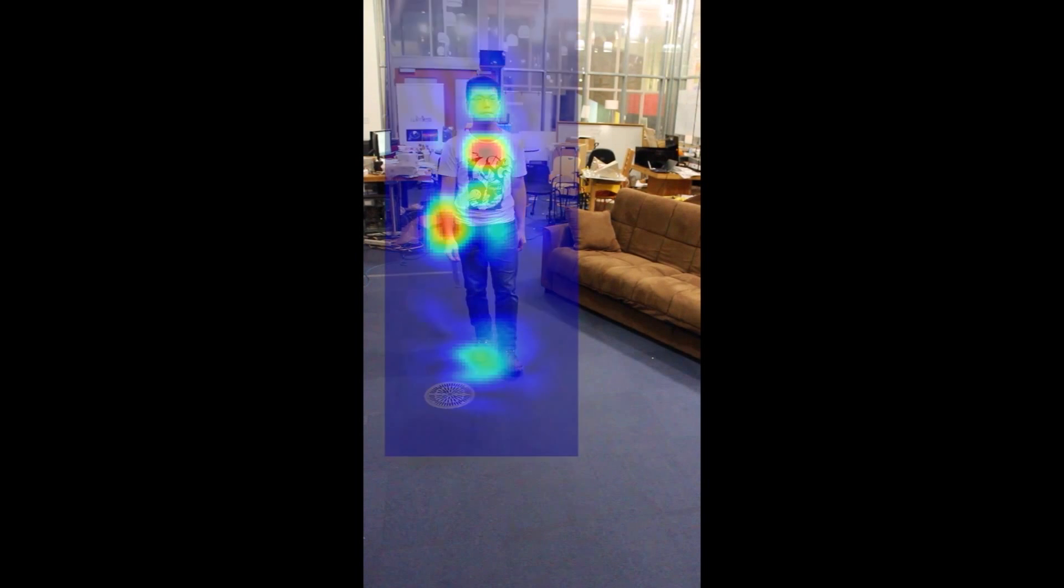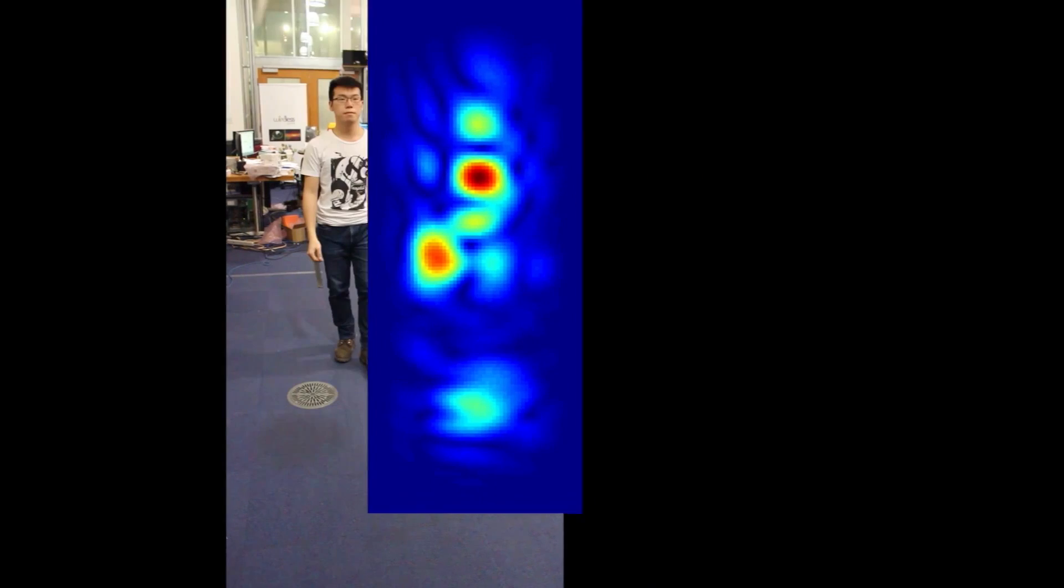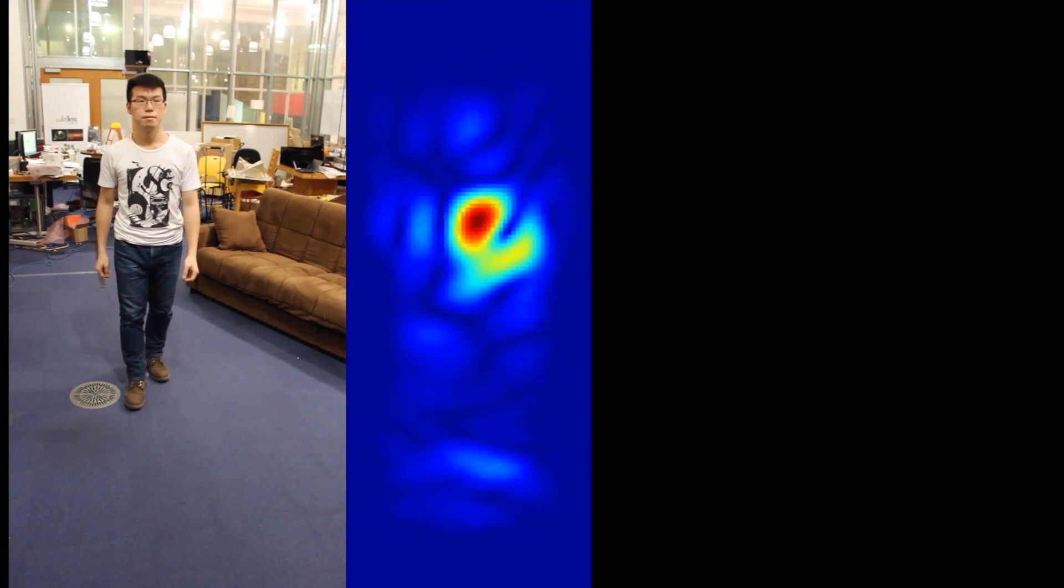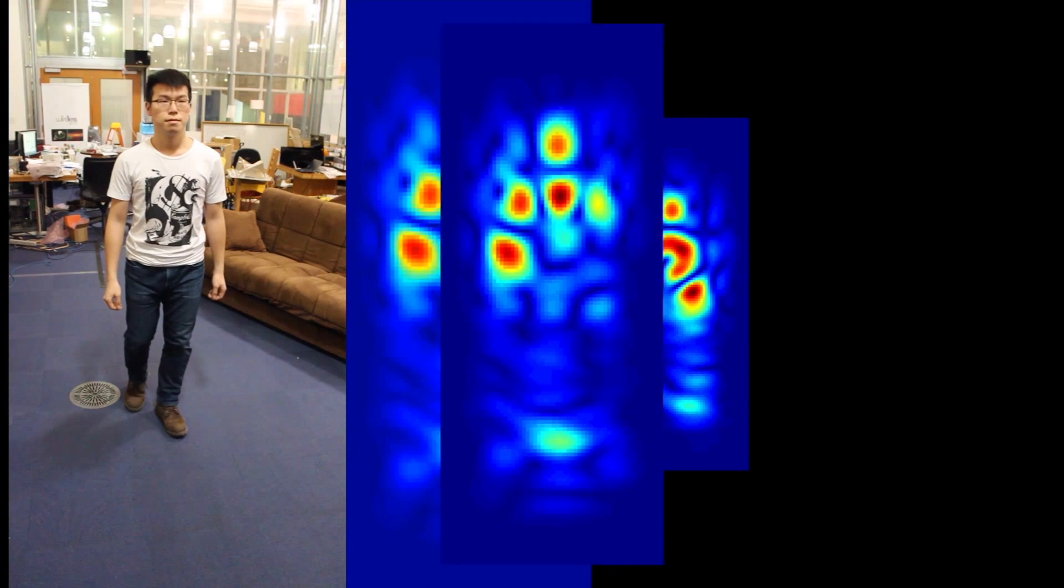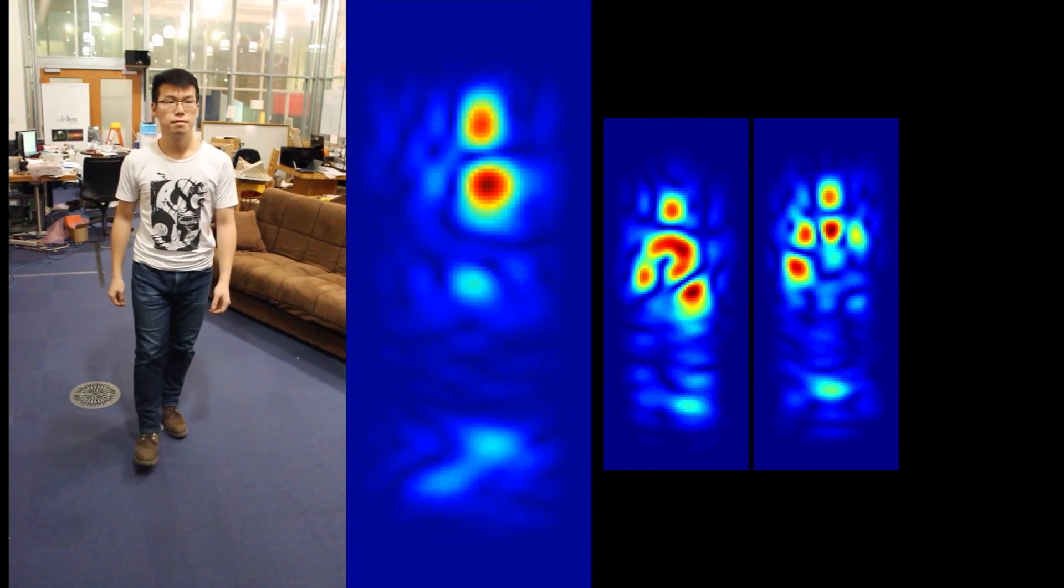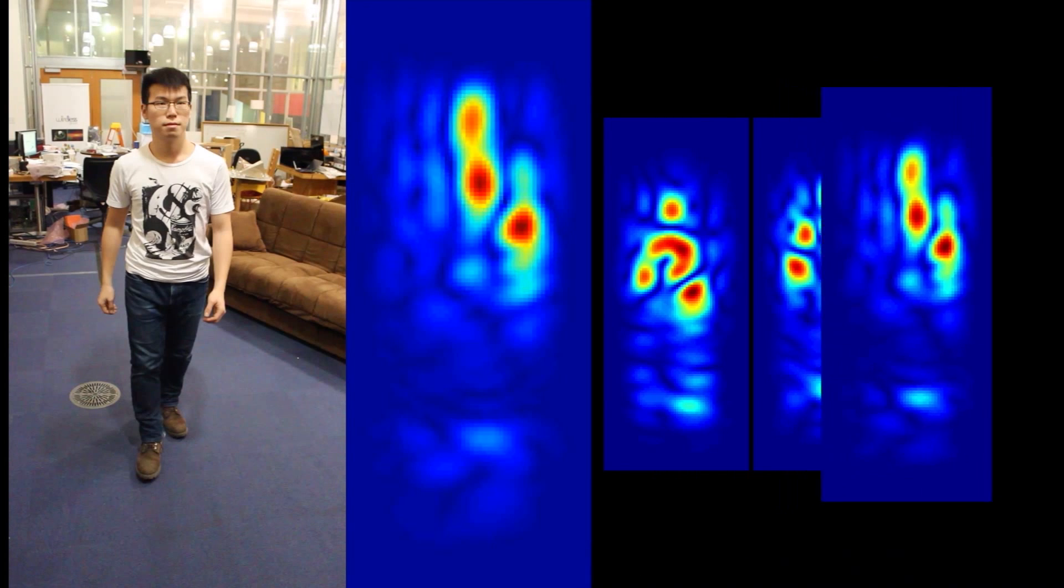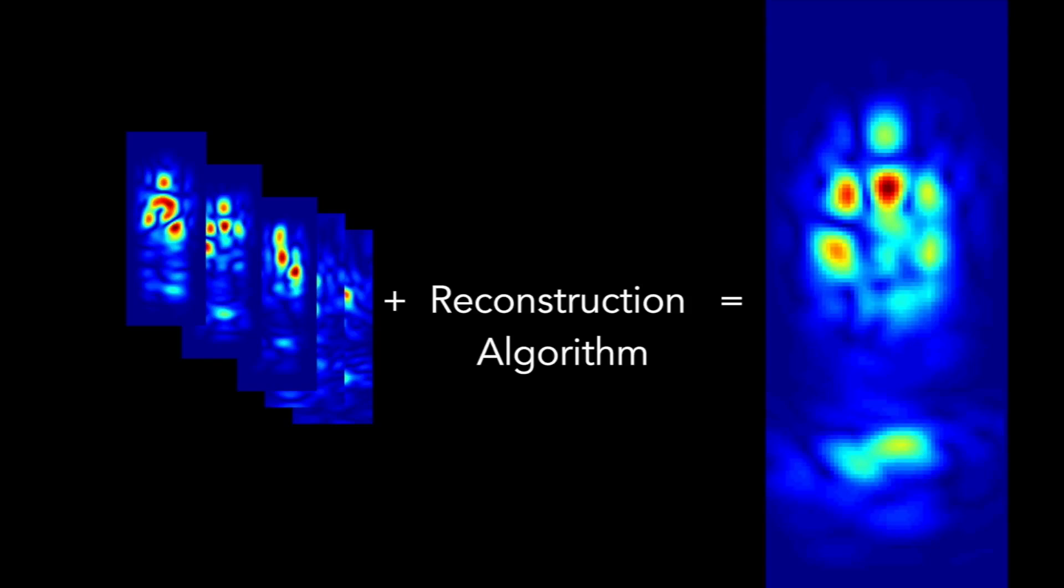Here, we show the output of the device as the person walks. At different points in time, different parts of the human body reflect the signal and the device captures multiple snapshots at various points in time. It then combines these snapshots through a reconstruction algorithm that allows the device to recover the human silhouette through the wall.